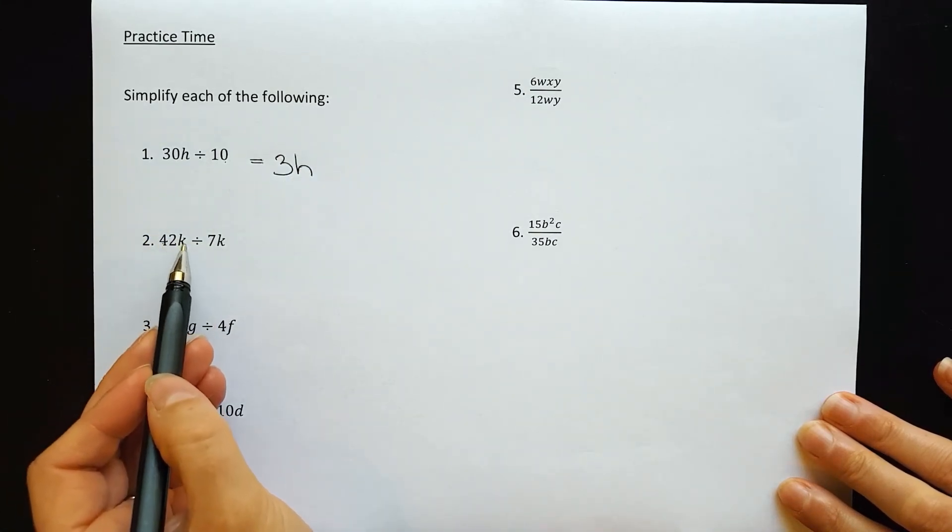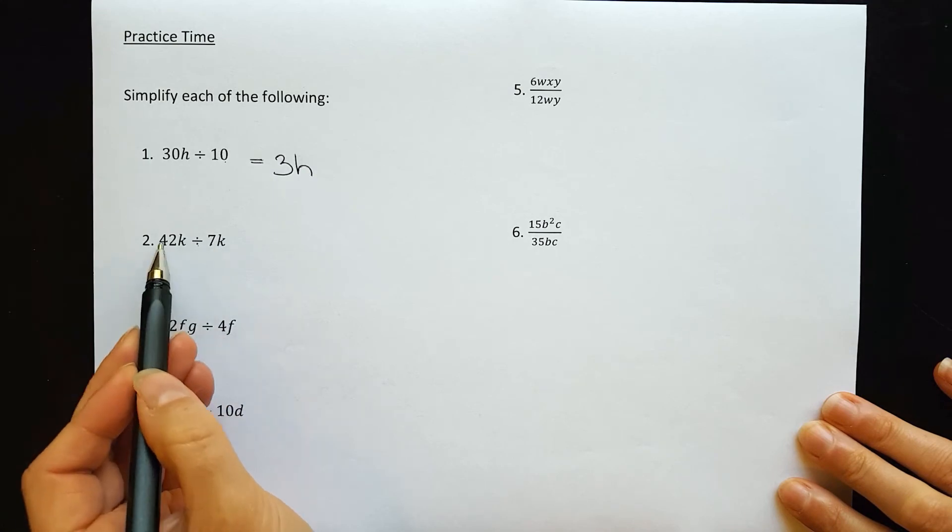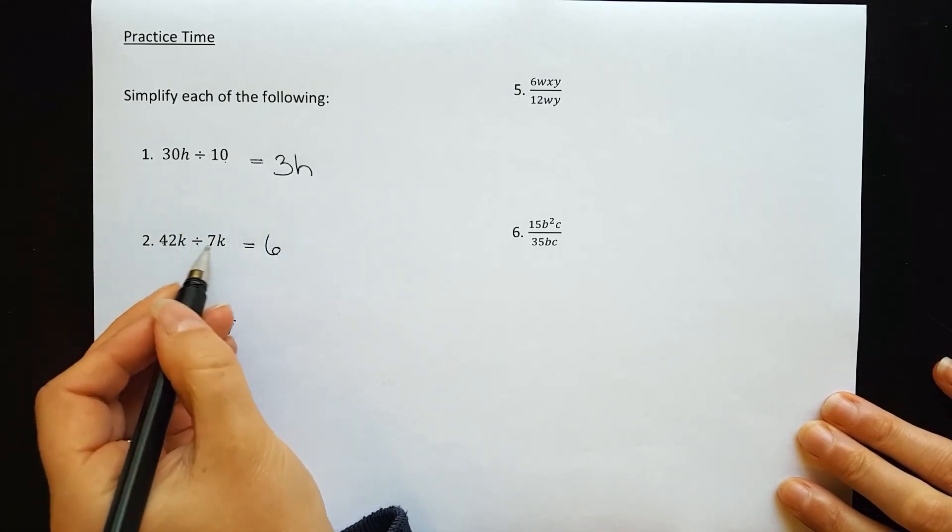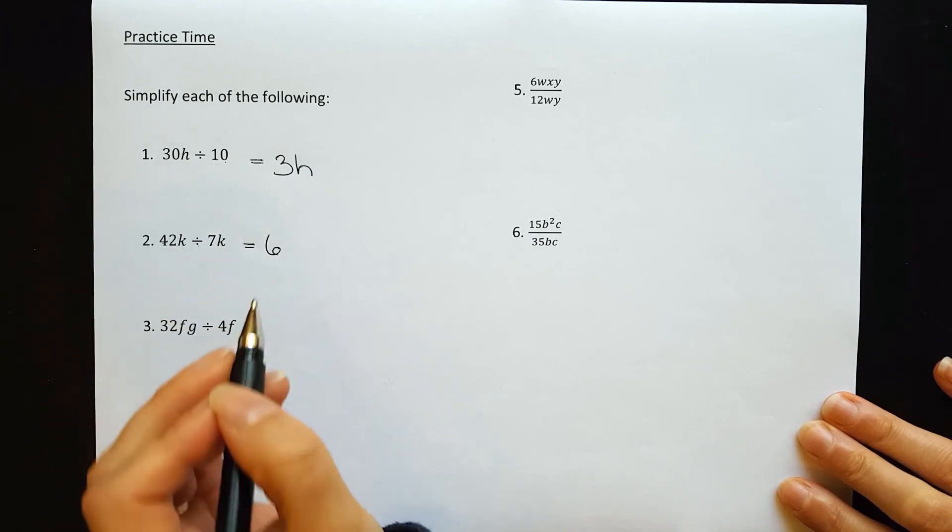Question 2: 42k divided by 7k. 42 divided by 7 is 6, and the k's—one in each term—cancel out. So the answer is 6.